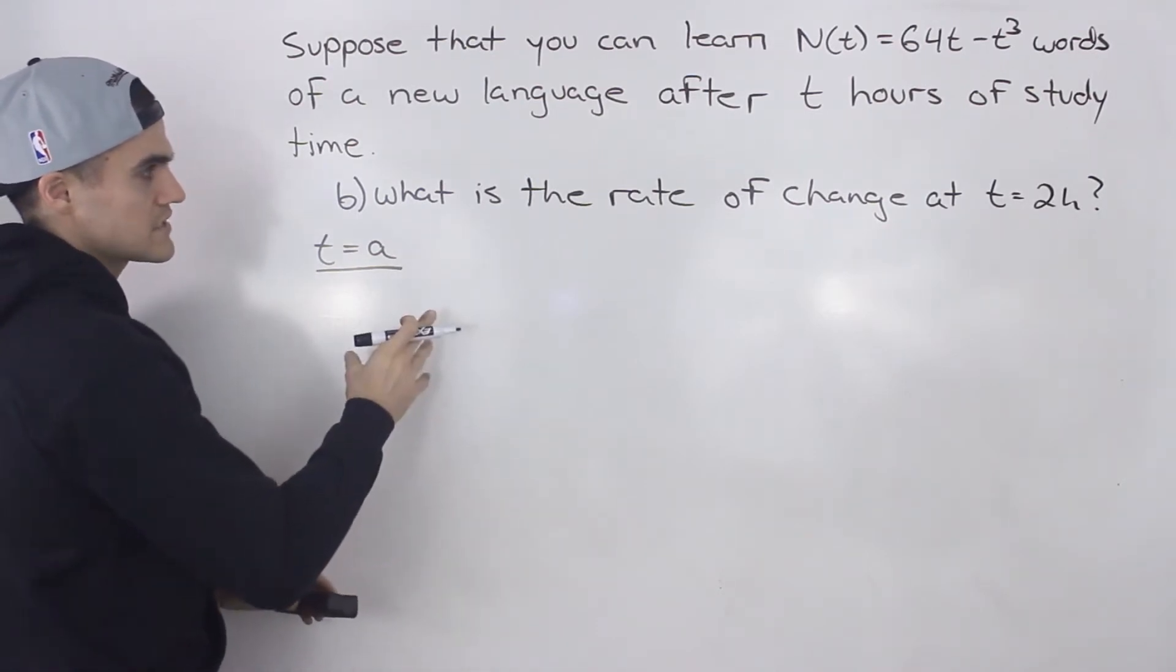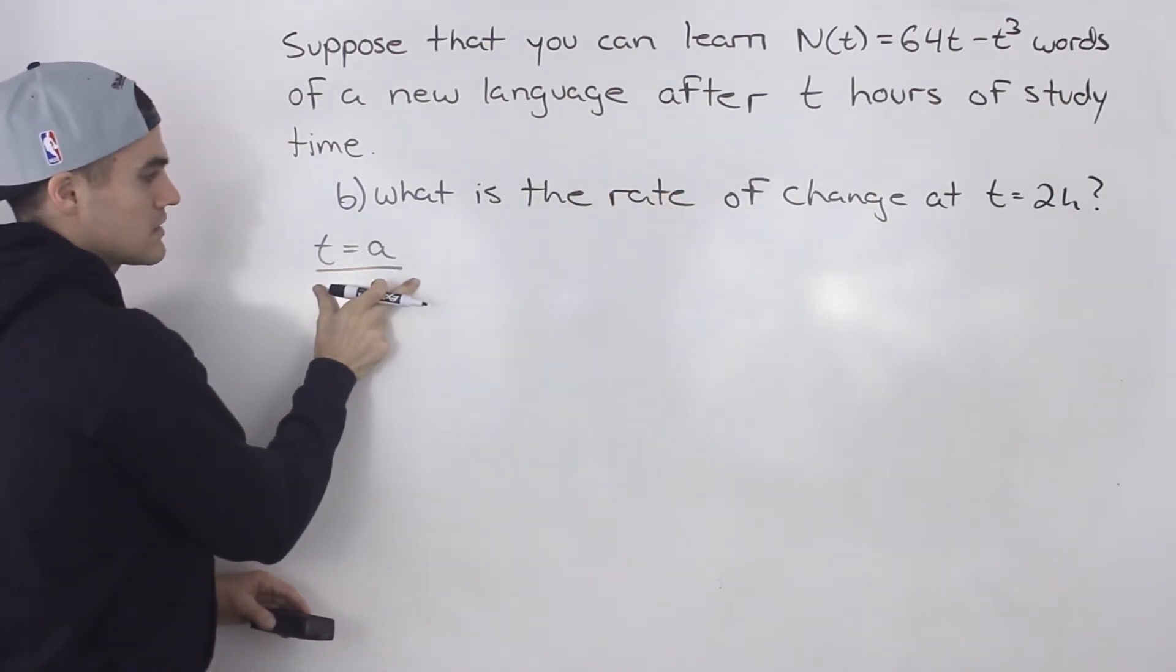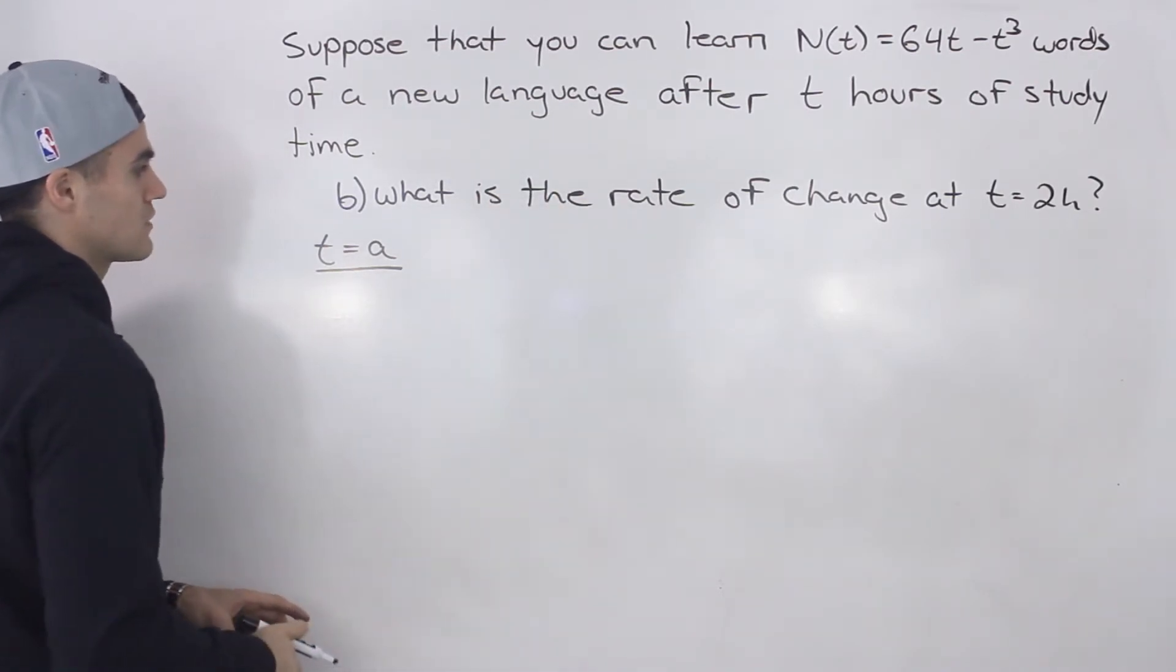You can also find the instantaneous rate of change directly at a t value of two. But I'm first going to find the general instantaneous rate of change, and then plug in that t value of two.